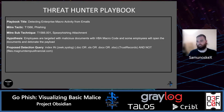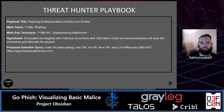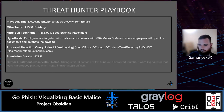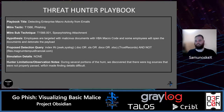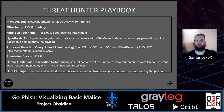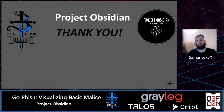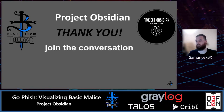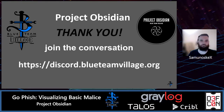The proposed detection query is: index in Zeek and syslog, .doc or .xls or .docx or .xlsx, trust records, AND NOT files.magnumtempestfinancial.com. For hunter limitations and observation notes: during several portions of the hunt, we discovered there were log sources that were not properly parsed, which made finding details difficult. Hunt findings: three users downloaded the malicious document, and two users appear to have been affected by the payload. That brings us to the end of the talk — thank you so much. To join the conversation, join us at discord.blueteamvillage.org.